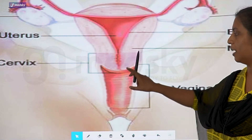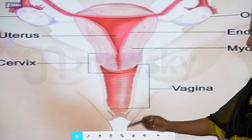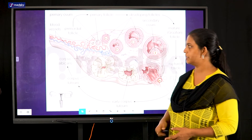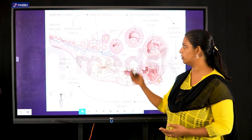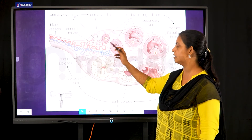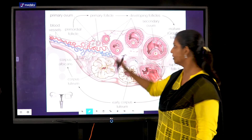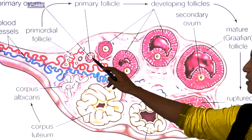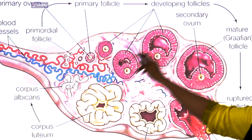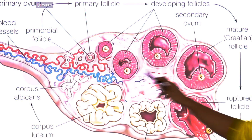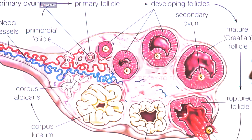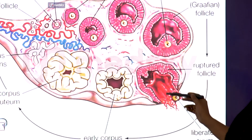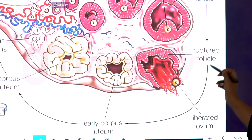Below the cervix is the vaginal opening. In a dissected view of the ovary, we can see the ovum and the primary follicles. Initially primary follicles are present, which develop into secondary follicles. The follicles increase in number, forming the mature follicle, also called the Graafian follicle.